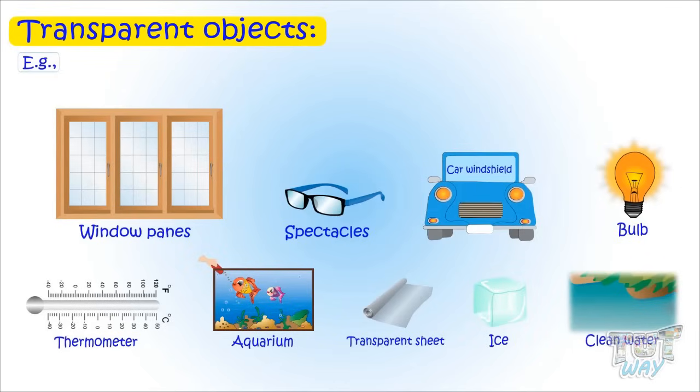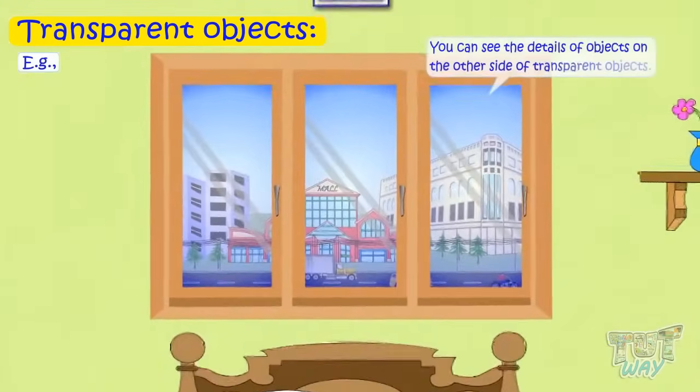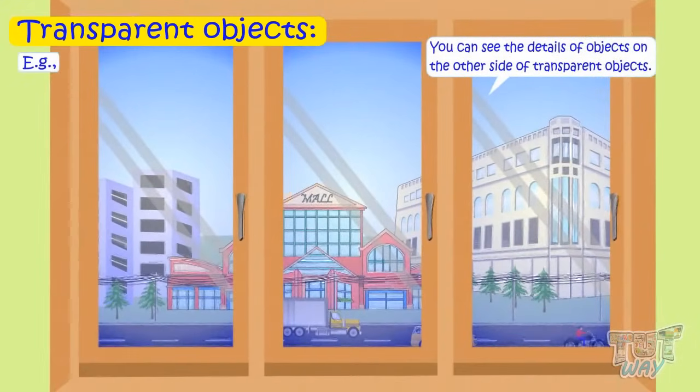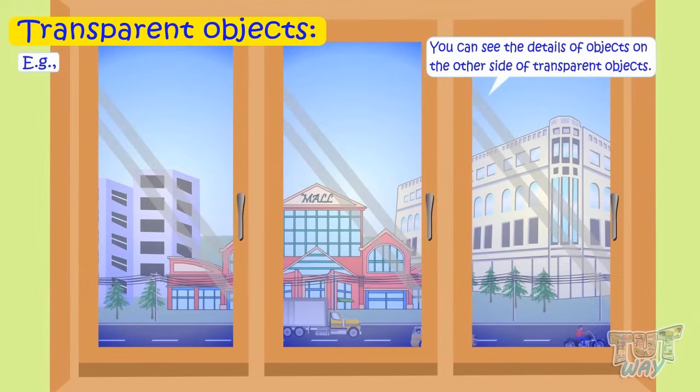and clean water are examples of transparent things. You can see the details of the objects on the other side of the transparent objects. It is because all the light passes through.